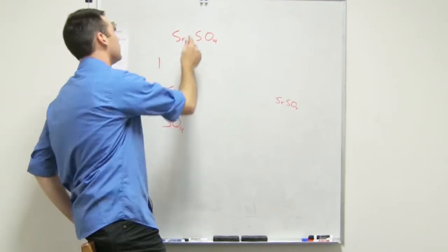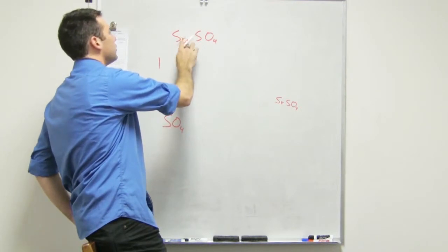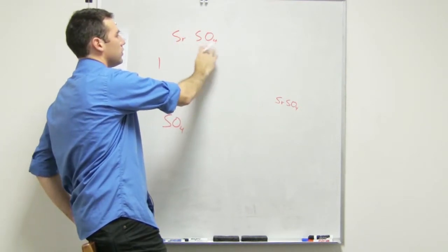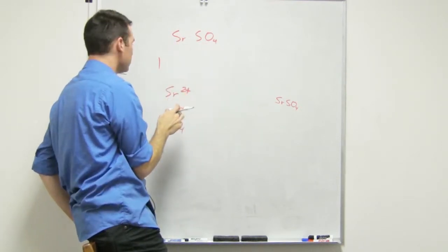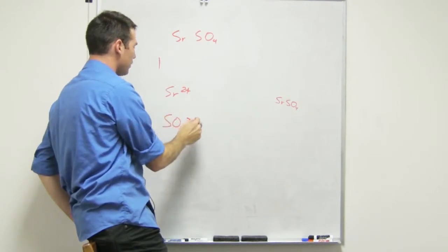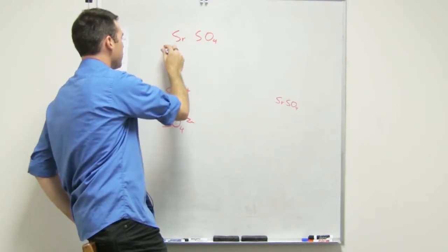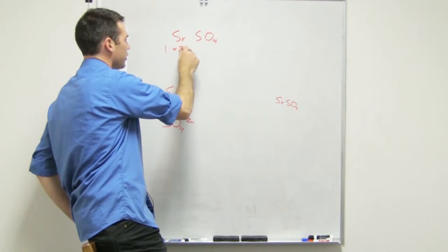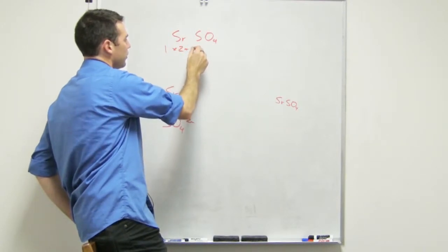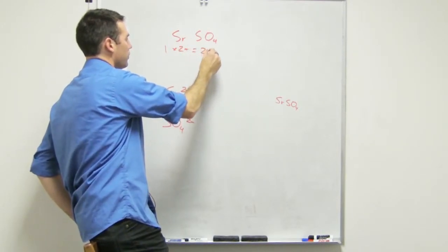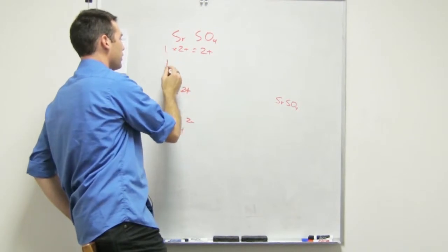No, look: the strontium has a two plus and there's no extra charges, so it has to be SO4 with a two negative. If we think of it this way: strontium, there's one, we know that the charge is two plus, so that means overall we have two plus right there. For SO4, we know there's one, we're trying to figure out what the charge is, and we know it has to...